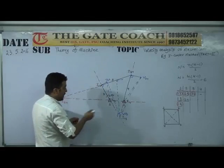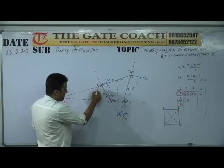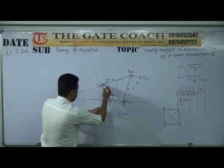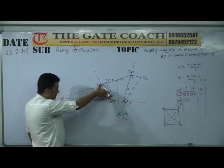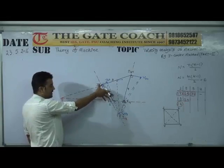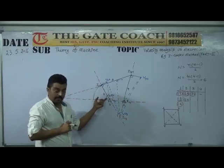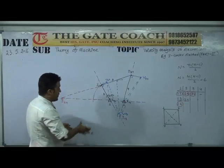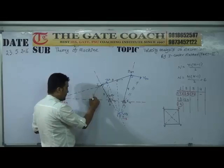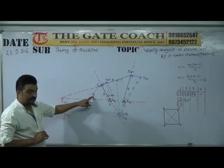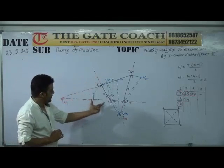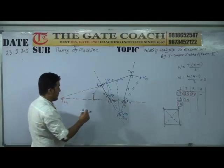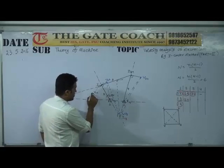Link 2 is rotating, tracing an arc. This arc means that the distance from I₁₂ to I₂₃ is the radius, and since omega 2 and this distance are known, we can calculate V₂₃. The velocity vector at I₂₃ is determined by omega 2 times this distance. So V₂₃ is established at this point.